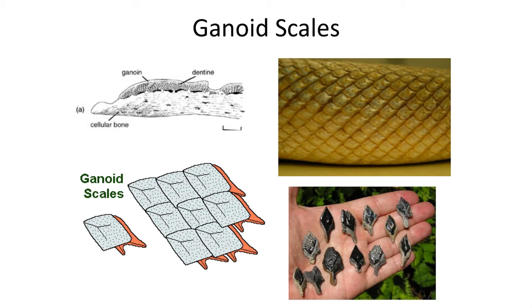The first and perhaps most common fossil fish scale are the ganoid scales. Ganoid scales are cellular bone covered in dentine or ganoine, an enamel-like hard apatite crystalline material. Ganoid scales are found in many of the primitive actinopterygian fish like the Polypteridae and the Lepisosteiformes, but lost in more advanced fish.